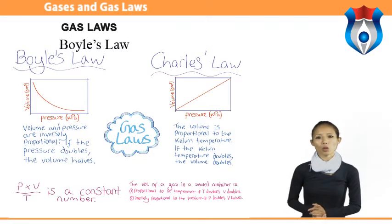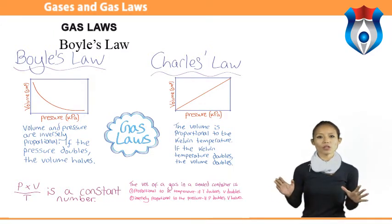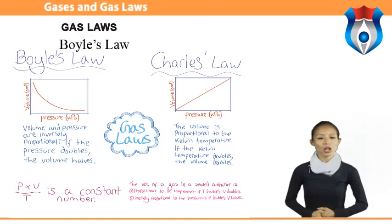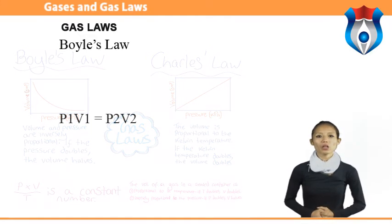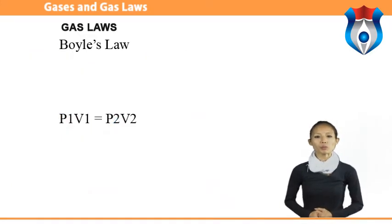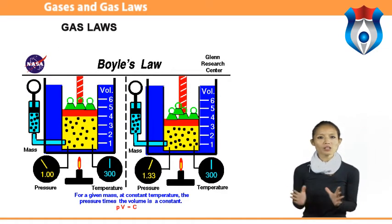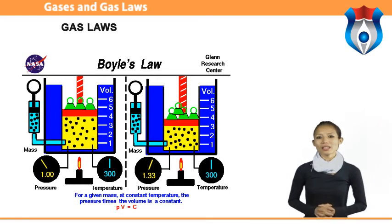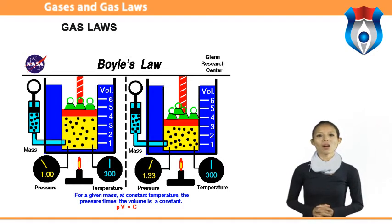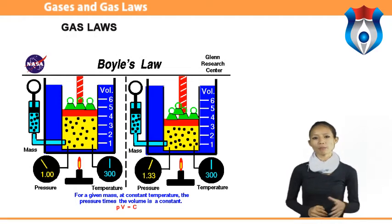Boyle's law: this law is about the pressure and volume relationship, and therefore assumes constant temperature — meaning the temperature does not change. P₁V₁ = P₂V₂. This law states that pressure and volume are inversely proportional — as one gets larger, the other gets smaller. P₁ would be before the pressure change and P₂ would be after the pressure change.